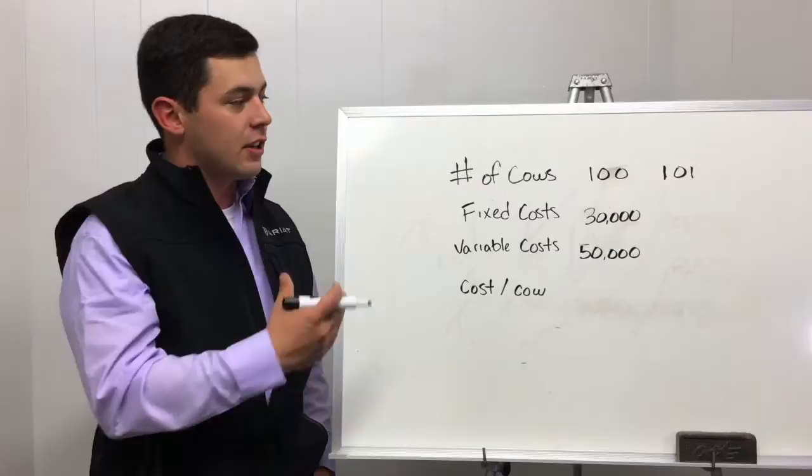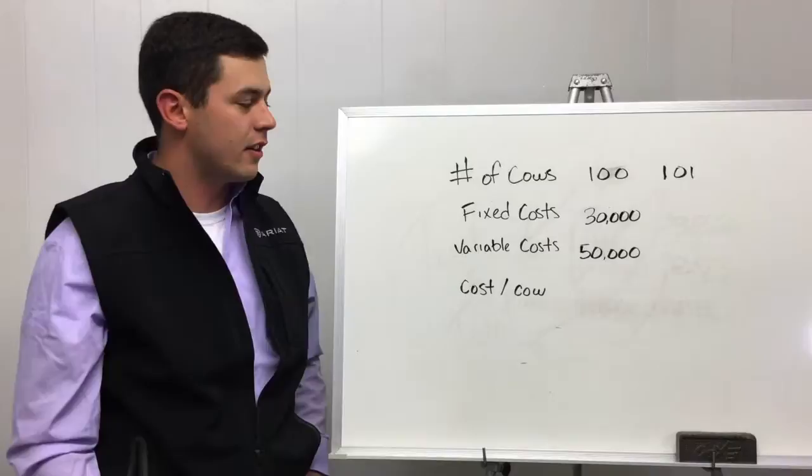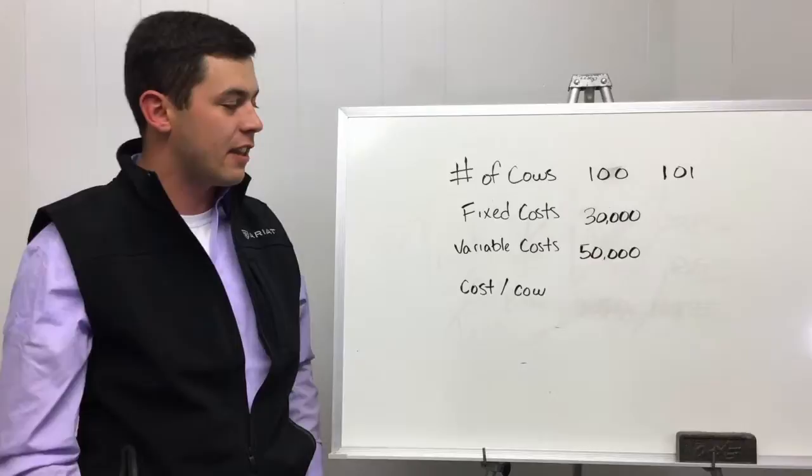We're just going to use simple math. The average cow size herd of 100 cows, you can see our fixed costs will be $30,000 and our variable will be $50,000 for this example. When we start putting some of that together, our average annual cow cost is right at $800.